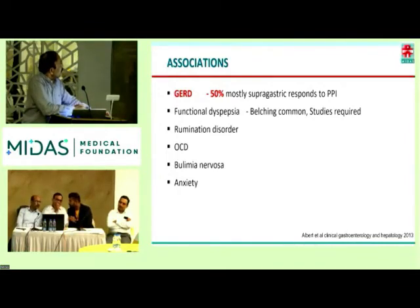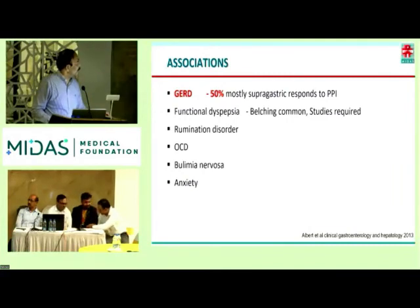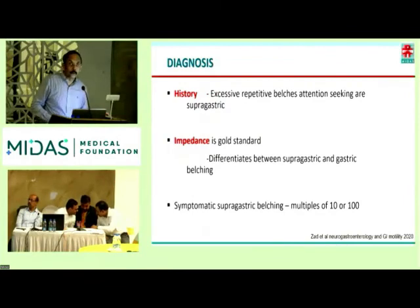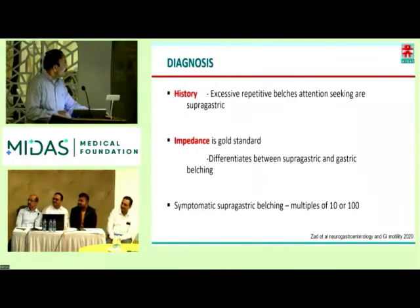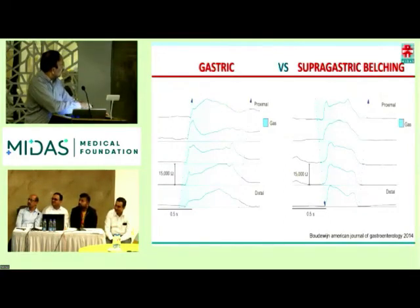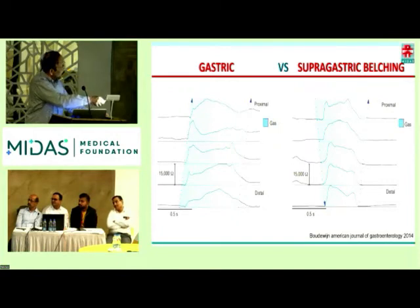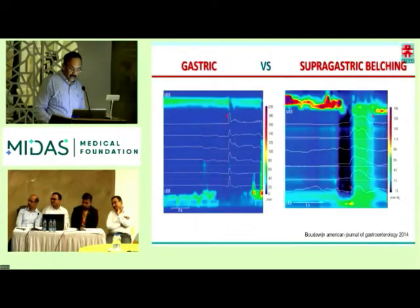Associations: 50% of patients will have supragastric belches. The reason is not known but they respond to PPI. For patients with functional disorders — dyspepsia, rumination, OCD, bulimia, anxiety — they also have belches. Excessive repetitive belching is supragastric. Impedance is the gold standard. You see here the graph of impedance: in gastric belching, it moves from one direction, while in supragastric belching it moves in the opposite direction. Sometimes to differentiate between the two, one has to use impedance and manometry.